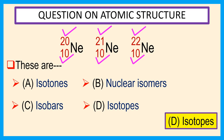So they are isotopes. Isotopes are atoms of the same element that have the same atomic number but different mass numbers. Thank you for watching this video.